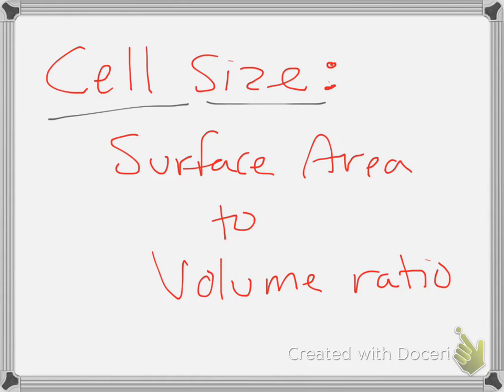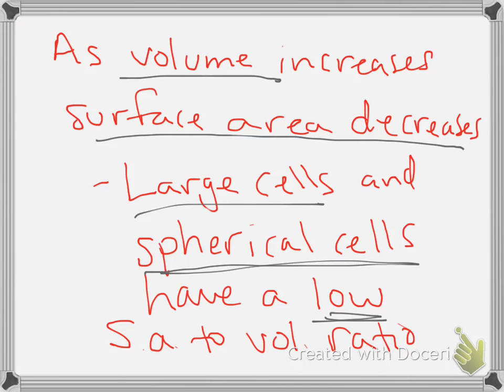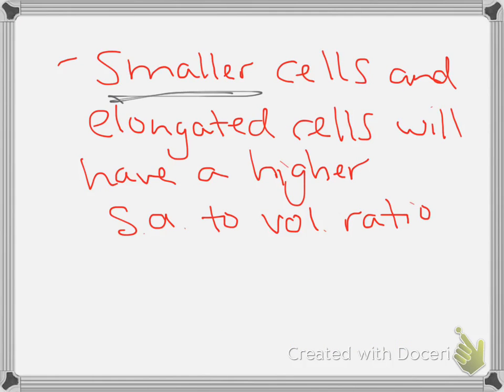Cell size is also something we want to take a look at. To understand cell size, you have to understand surface area-to-volume ratio. As volume increases, the surface area will decrease. So the bigger the cell gets, the less surface area it's going to have, which means it has a low surface area-to-volume ratio. Spherical cells are going to have a low surface area-to-volume ratio. If you have smaller cells or elongated cells, you're going to have a higher surface area-to-volume ratio. Let me show you why this is important.